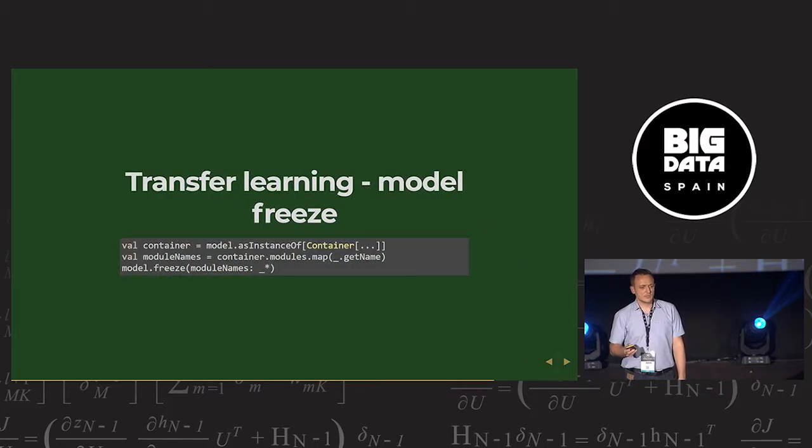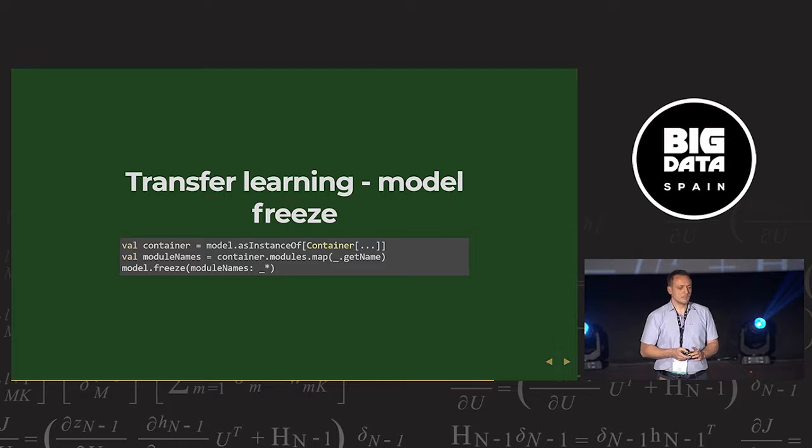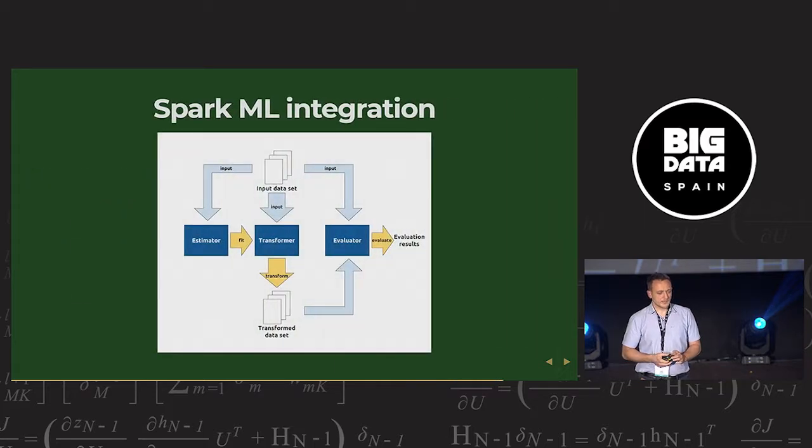You can also do transfer learning to freeze the model. It's also not really clear right from the start from the documentation how to do this. But you have to use the model names to layer names to freeze particular layers. You have to freeze them by a name. And it's not really clear how to get the name at first. So you can use something like this. You have to first cast the model to a container class. And then you have access to your layers inside.